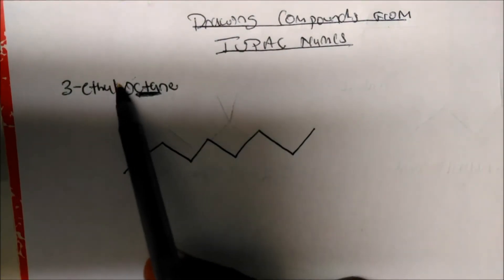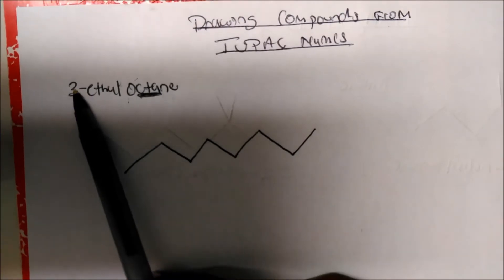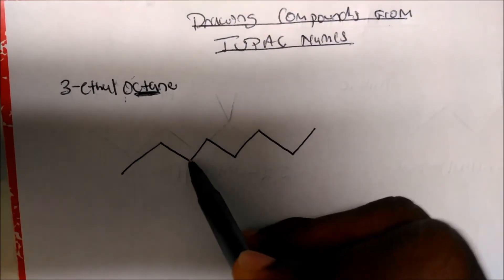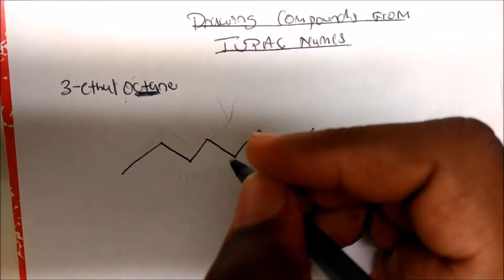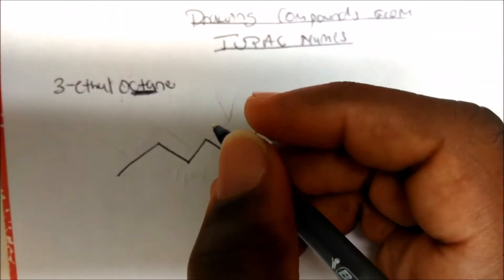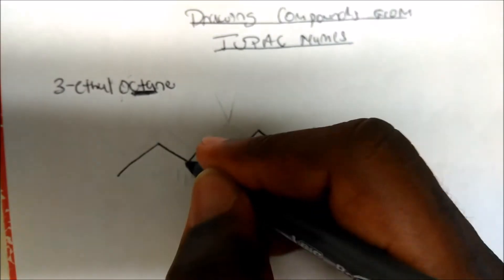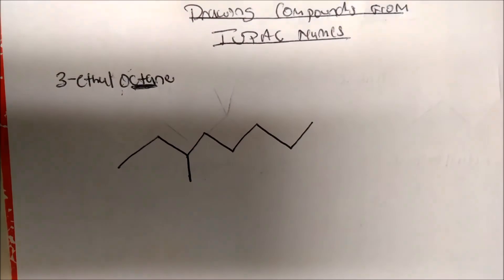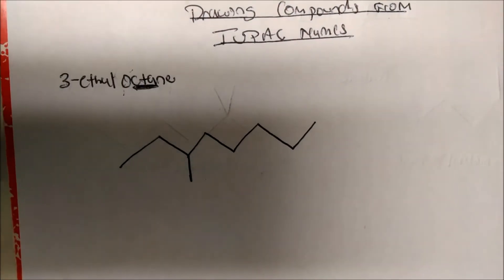Now what this is telling me is that on carbon 3, I have the ethyl group. So carbon 1, 2, 3, I have the ethyl group. Now an ethyl, remember, a methyl is one branch, just a carbon, which is a CH3. That is a methyl.